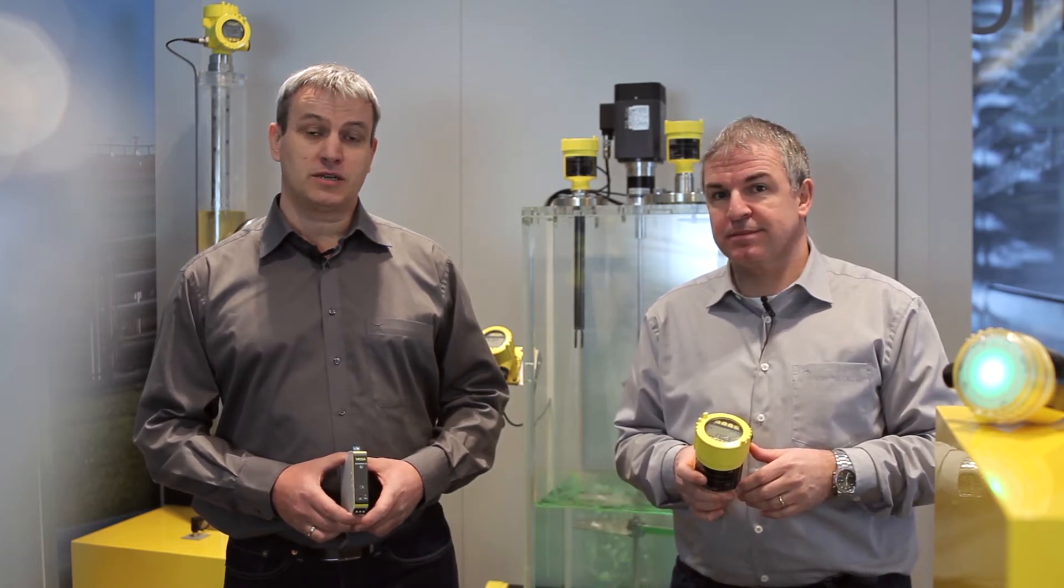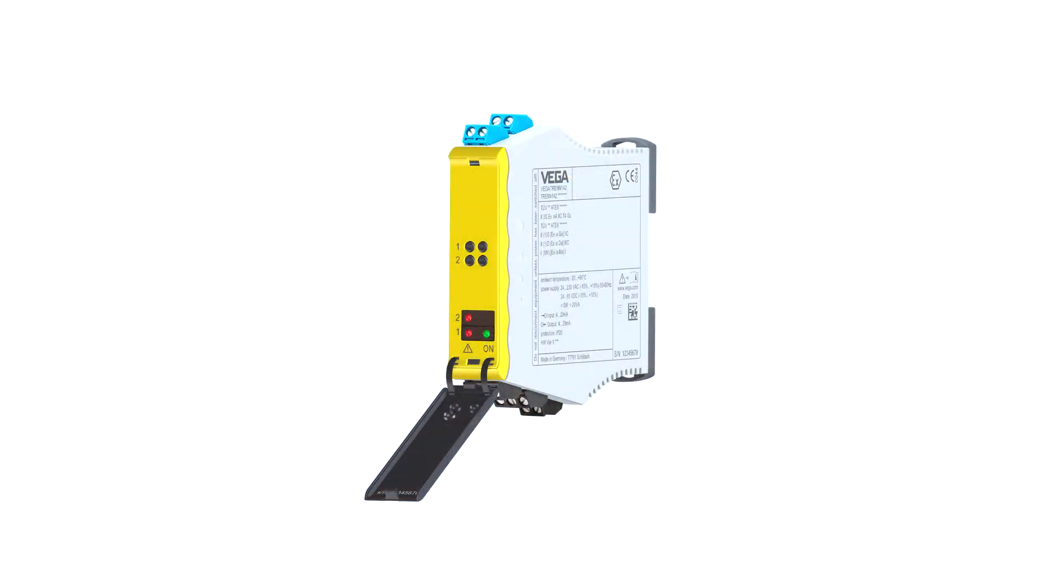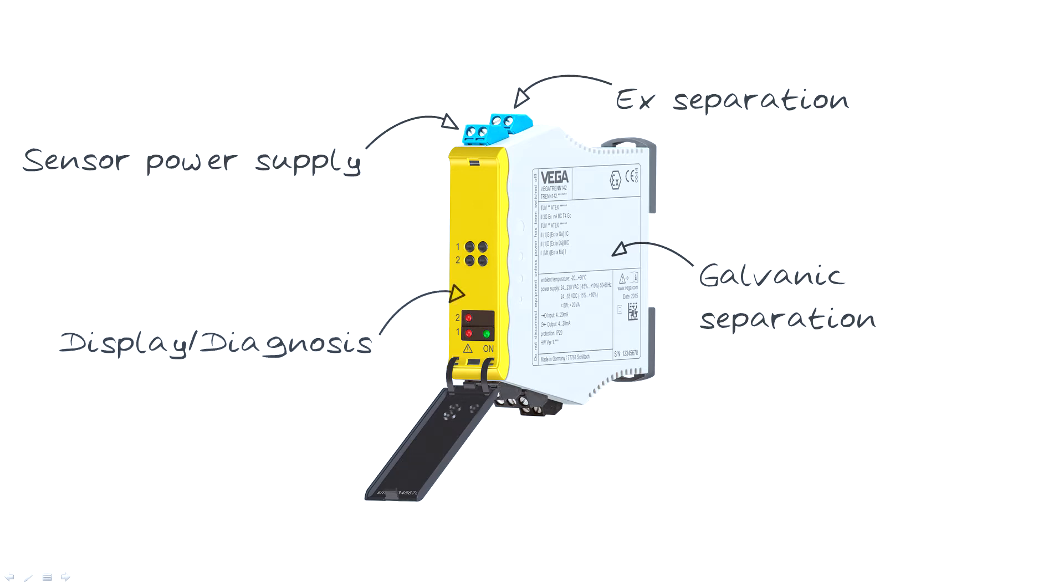First, let's have a look at the task of a separator. First of all, it can supply the sensor with power and in case of hazardous areas it can also be used as an EX separator. The inputs and outputs as well as the supply voltage are galvanically isolated. The instrument also provides local display and diagnostic options.